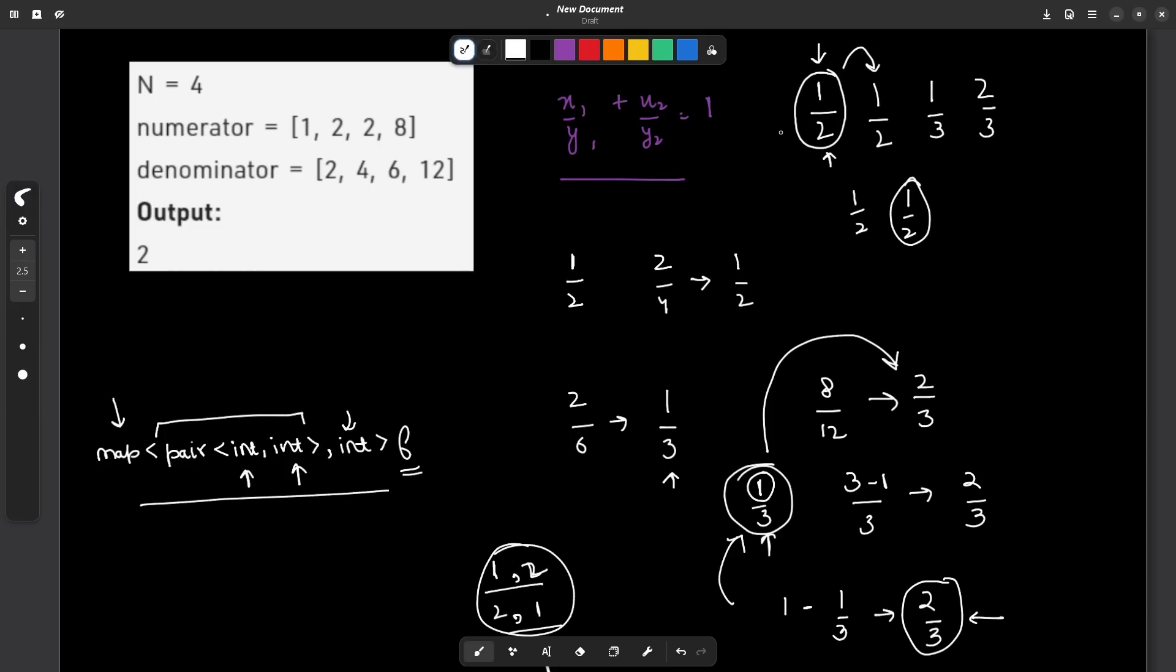That means I am saying that I have encountered this particular element before. Now when I reach the next element, when I reach this particular element I say that I currently have 1 by 2, I need 1 by 2 more. How will I get it? I say that I have already encountered 1 by 2 once, so its frequency is 1. So I will add 1 to my answer. Now what I will do? I will update the frequency of 1 by 2 again before moving on to the next index and the frequency of 1 by 2 will now become 2.